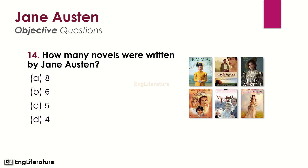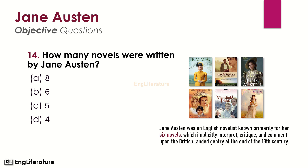How many novels were written by Jane Austen? Jane Austen was an English novelist known primarily for her six novels, which implicitly interpret, criticize, and comment upon the British landed gentry at the end of the 18th century. The right choice is number B — Jane Austen wrote six novels.